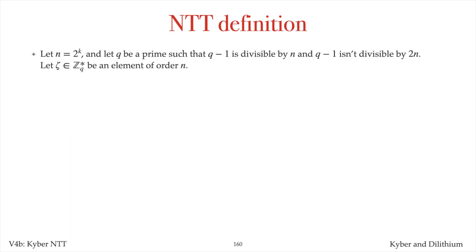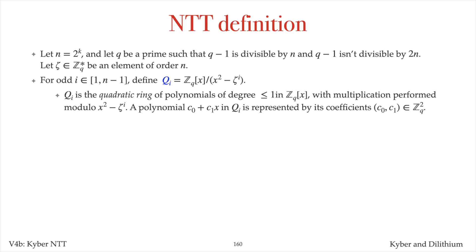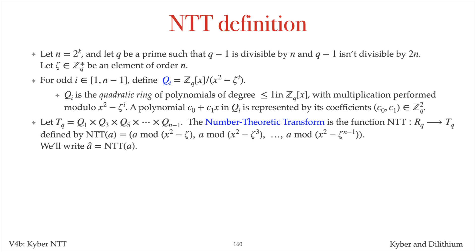Let n be a power of 2, and let q be a prime such that q minus 1 is divisible by n but not by 2n. Let zeta be an element of order n in the integers modulo q. For odd integers i between 1 and n minus 1, define qi to be the set of polynomials over Zq having degree at most 1, where polynomial multiplication is performed modulo the quadratic polynomial x squared minus zeta to the i. qi is called a quadratic ring. Elements in qi can be represented by their coefficients as a pair of Zq elements. Let Tq be the product of the n/2 rings q1, q3, q5, up to qn minus 1.